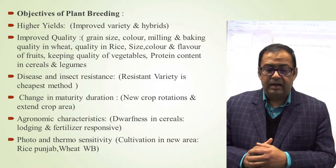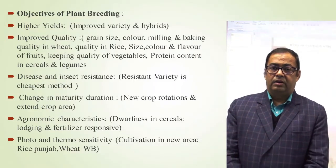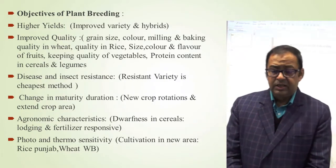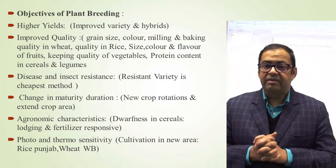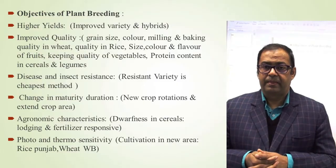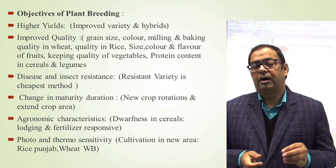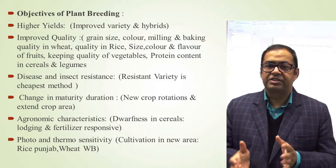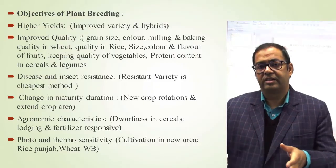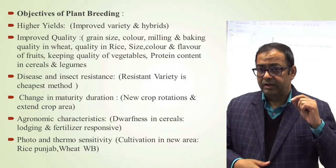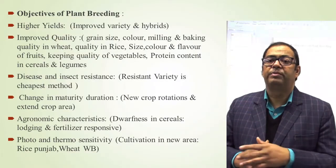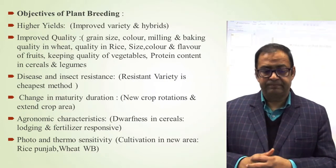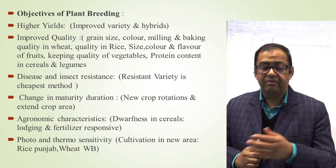Another objective is to develop disease resistant varieties. Development of a resistant variety is the cheapest method. Sometimes we apply insecticide or pesticide just to reduce the infestation or infection of disease or insect pests, but a resistant variety is the foolproof method to get rid of diseases and insect pests.